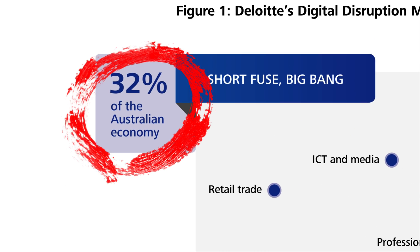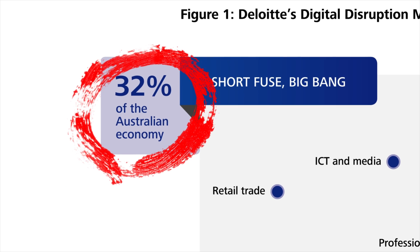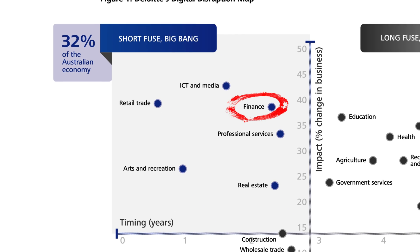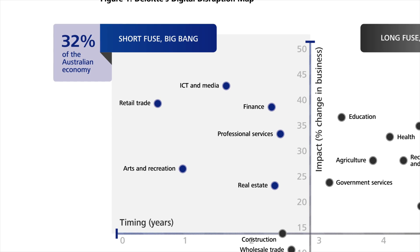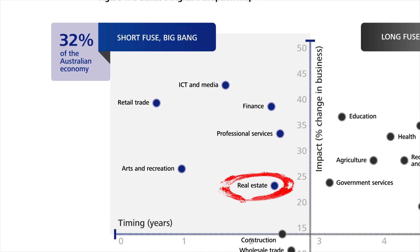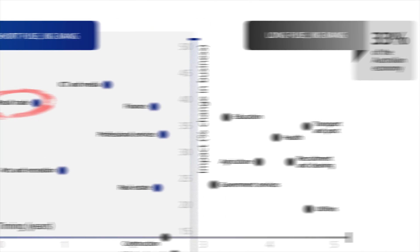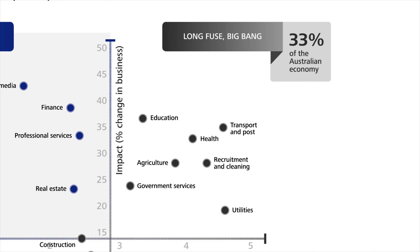The model was built specifically for Australia, but it's still a good model to position yourself. Finance, for example, is in the short fuse, big bang quadrant — same thing with real estate, arts and recreation, and retail. Long fuse, big bang, meaning the impact will be huge but there's still a little time to come, includes things like health, education, agriculture, and utilities. Explore the model and see where you position yourself.